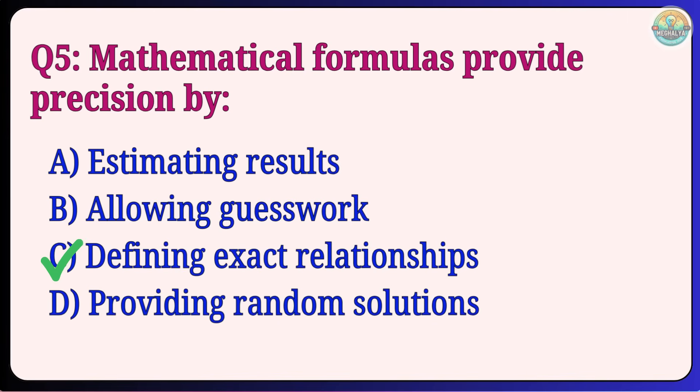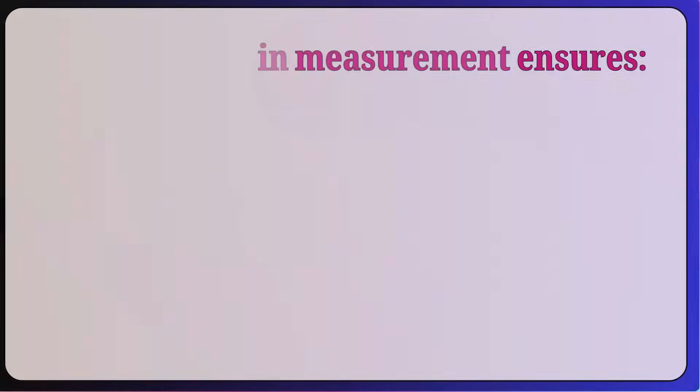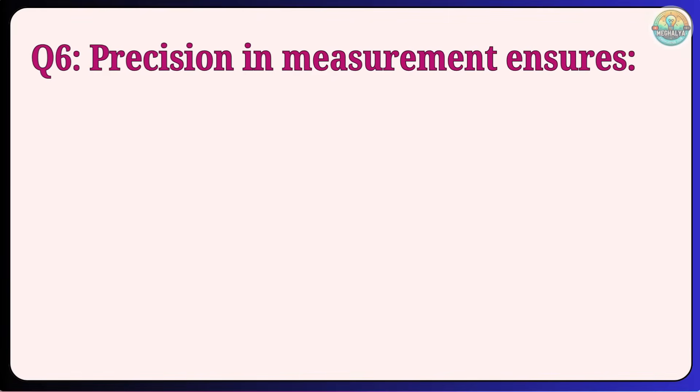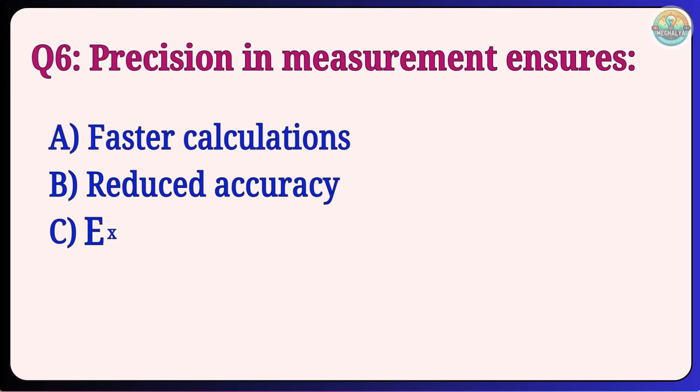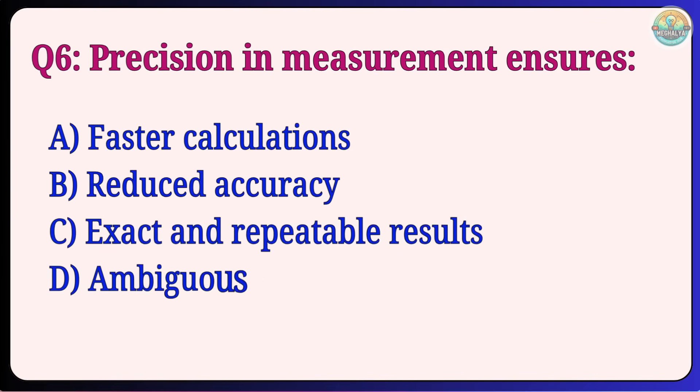Question 6: Precision in measurement ensures Faster calculations, Reduced accuracy, Exact and repeatable results, Ambiguous outcomes. Answer: C, Exact and repeatable results.